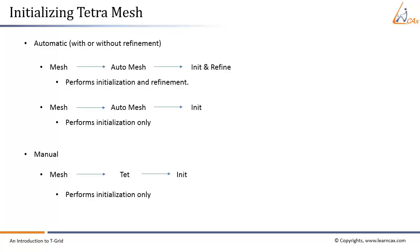Initialization of the tetra mesh is possible either automatically or manually. For the automatic option with or without refinement, go to Mesh, then select Auto Mesh. Under Volume Fill, ensure Tetra is selected. Then click the Set button so that the Tetra panel will open. Click on Init and Refine — this option performs both initialization and refinement.